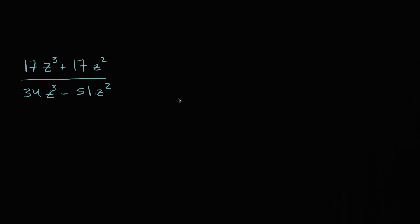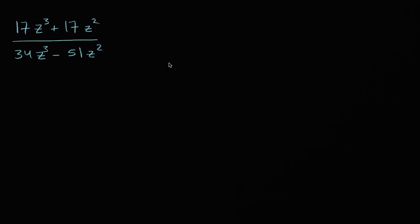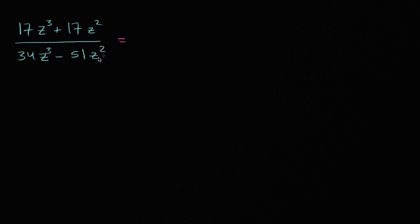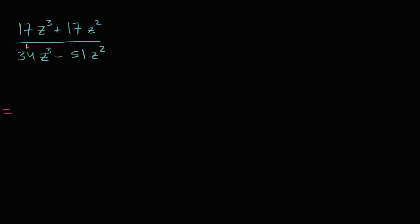Let's do another one. It's a slightly hairier expression, but let's do the same drill — simplify it while being conscientious of restricting the z values so we get an algebraically equivalent expression. Let's think about where this is undefined by factoring the denominator. Every term in the numerator and denominator is divisible by z² and by 17, so it looks like 17z² can be factored out.